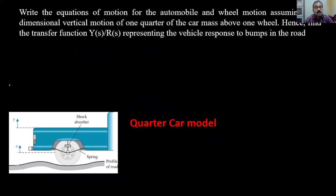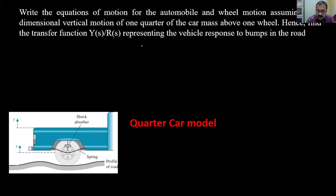Next we take an example from a mechanical system: write the equations of motion for the automobile and wheel, assuming one-dimensional vertical motion of one quarter of the car mass above one wheel — the quarter-car model — and find the transfer function Y(s)/R(s) representing the vehicle response to road bumps.